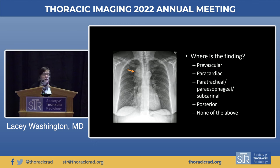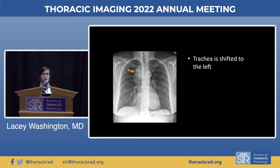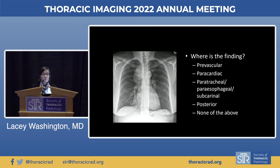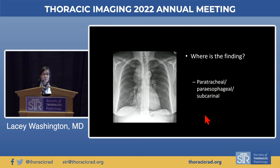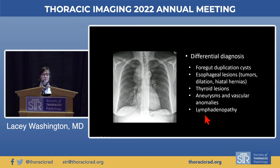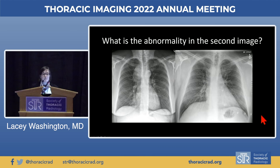One more case: the trachea has shifted to the left, placing this finding in the middle mediastinal — paratracheal, paraesophageal, and subcarinal — differential diagnosis. On this case, you have a long differential diagnosis and there's not much we can do beyond that on the plain film alone.